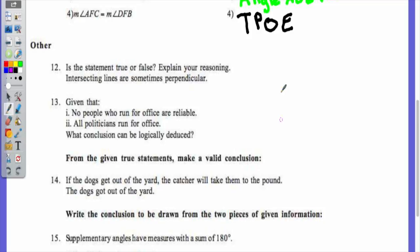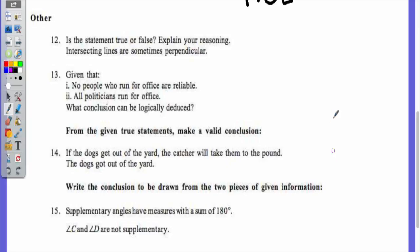Now, here is the really difficult one. If the dogs get out of the yard, the catcher will take them to the pound. Your dogs got out of the yard. What happened? The catcher will take the dog to the pound. Don't just put the dog will go to the pound. You need to put the catcher will take the dog to the pound. Supplementary angles have measures with a sum of 180 degrees. Angle C and angle D are not supplementary. Angle C and angle D do not measure 180 degrees. Perfect.